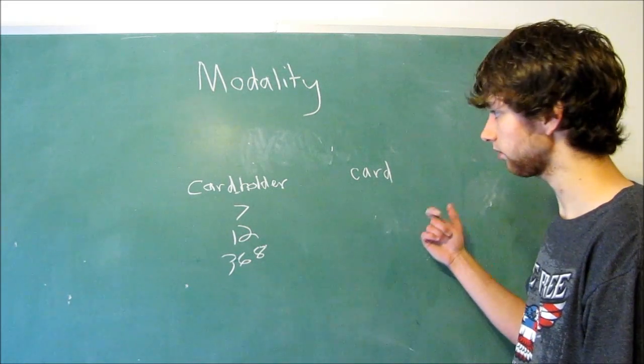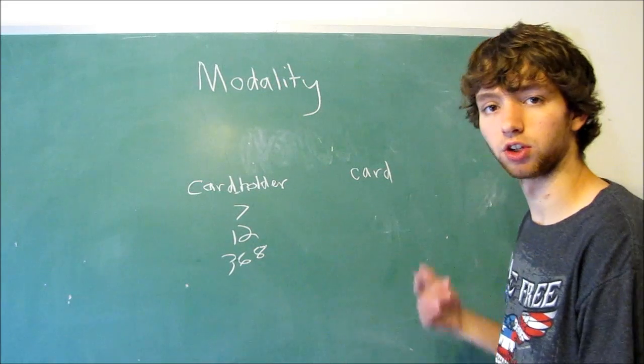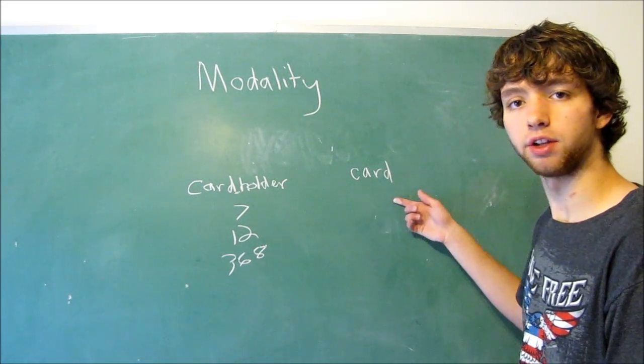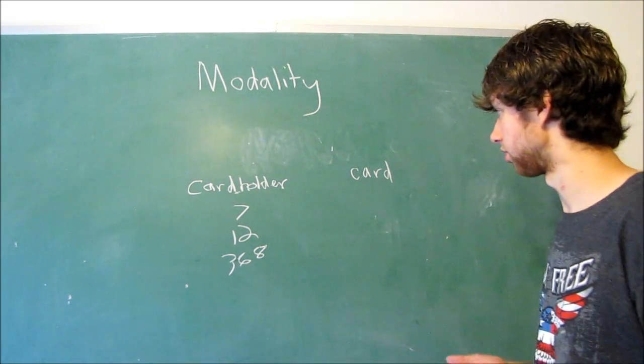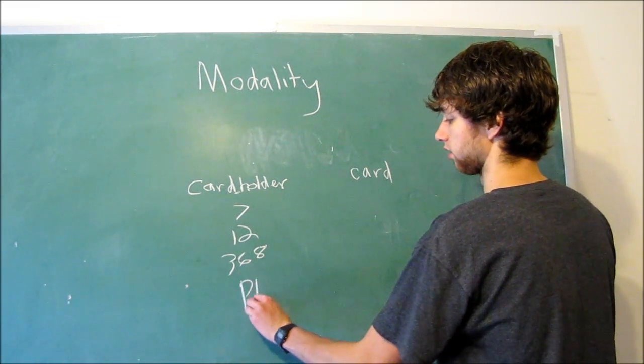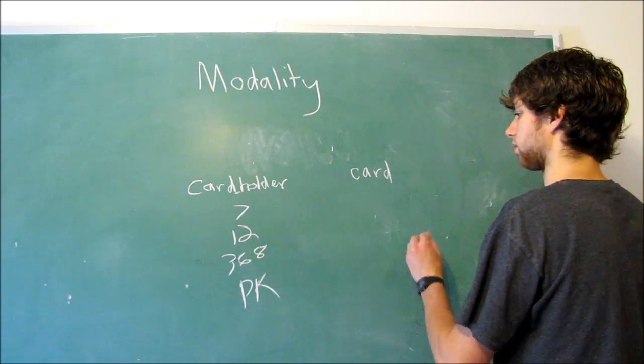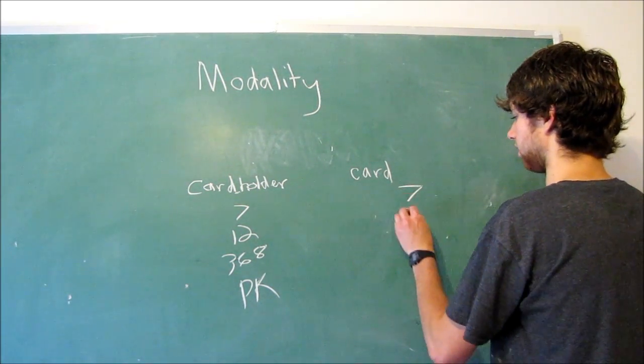Card, that is going to have a column which is a foreign key referencing the card holder, because the card is the child in this relationship. So the card holder has the primary key. Card is going to have a foreign key which connects to these.